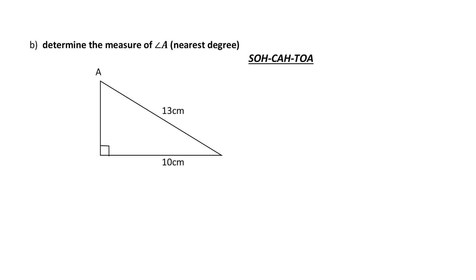Why don't you try this one on your own, and I will do it in a couple seconds. Hopefully you've tried it. First step — it says determine the measure of angle A. To figure out which ratio to use, I must identify the sides. Angle A is what I'm looking from, and 13 is across from the right angle, which makes it my hypotenuse.